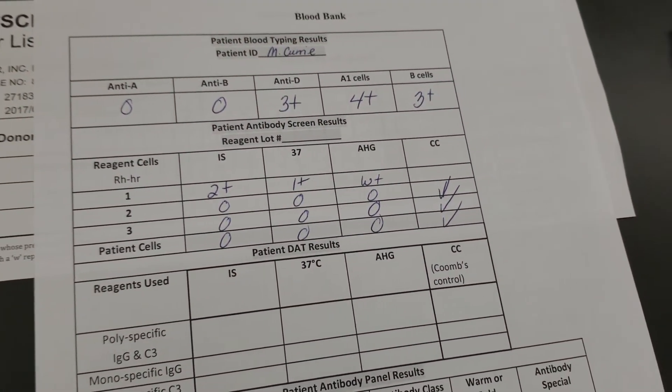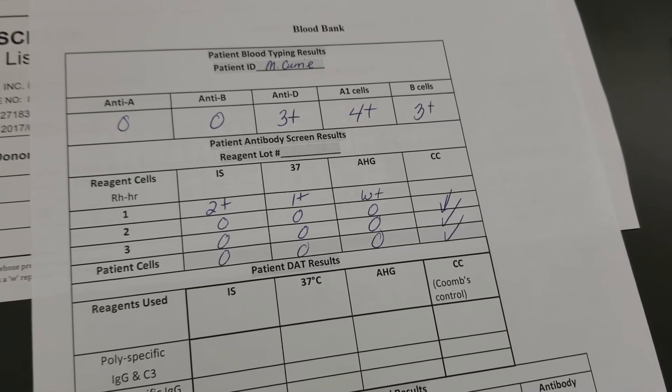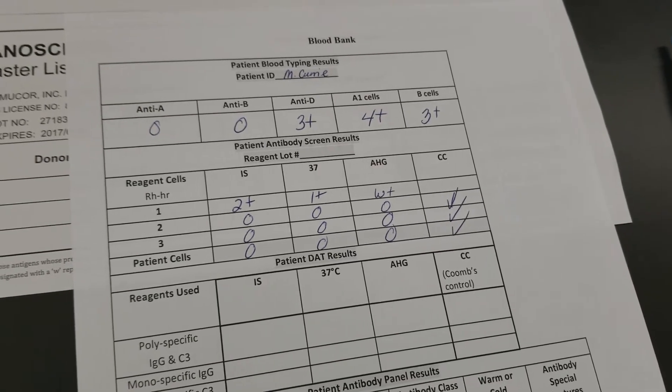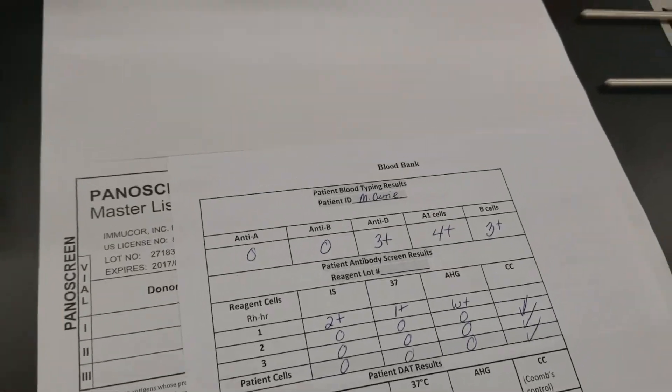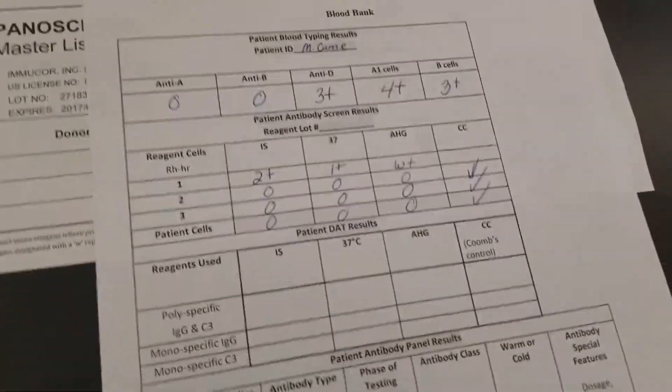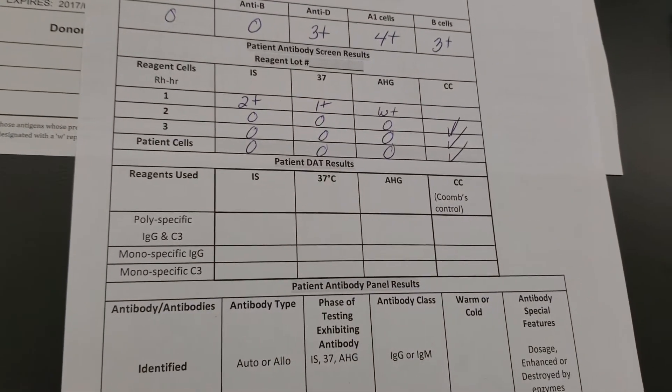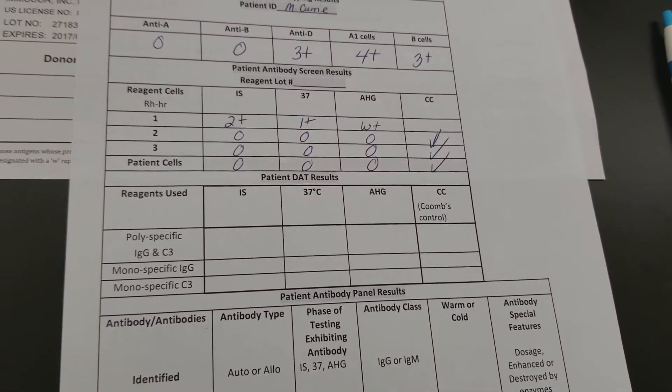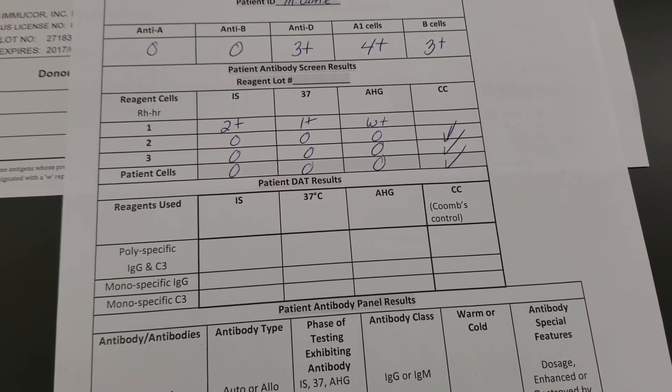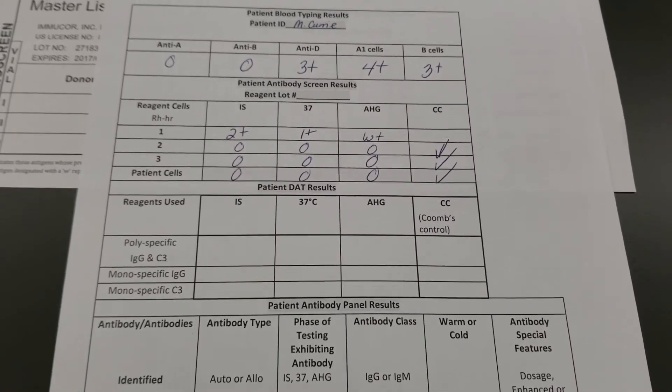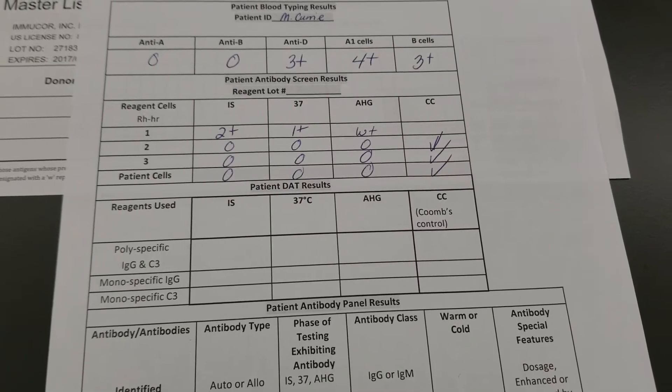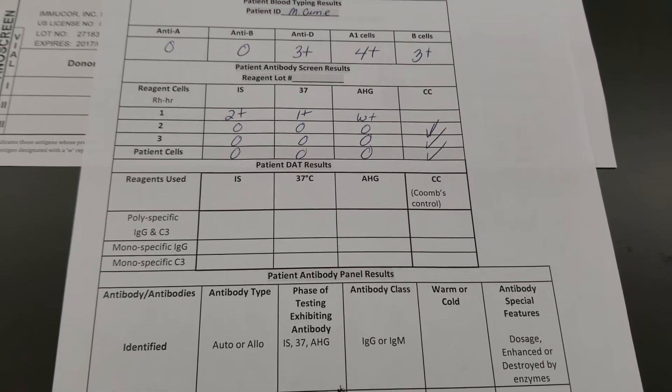If you look here, this is our patient and we have a positive antibody screen only in the one cell. We can look at the antigen gram later, and so we're going to do this now to see if we can identify that antibody. Notice we did not need to do a DAT, a direct antiglobulin test, because the patient did not have an autoantibody, so we don't need to worry about trying to identify an antibody or if there's complement coating the patient's own cells.